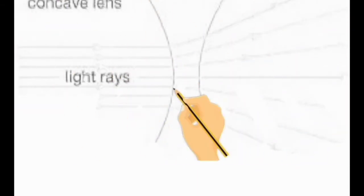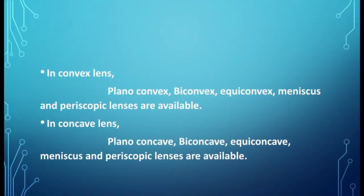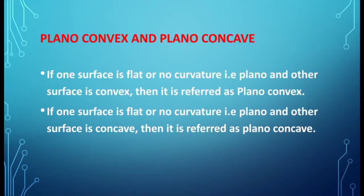Diverging light rays in a concave lens are shown here. In convex lenses, different forms are available: plano-convex, biconvex, equiconvex, meniscus, and periscopic lenses. In concave lenses, different forms are available: plano-concave, biconcave, equiconcave, meniscus, and periscopic lens.